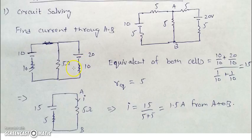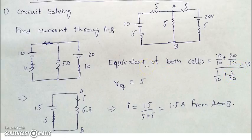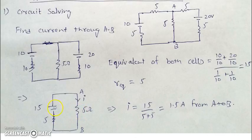The equivalent of the two parallel cells: using the parallel combination formula, (10/10 + 20/10) divided by (1/10 + 1/10) gives E_equivalent = 15 V and R_equivalent = 5 ohms. The equivalent resistance of the full circuit is then 10 ohms (5 plus the series resistances), with a 15 V battery giving a current of 1.5 amperes.